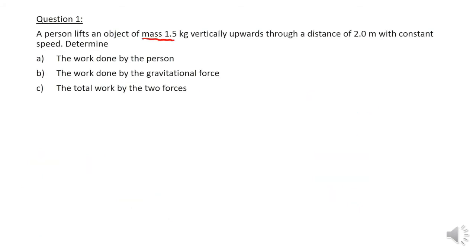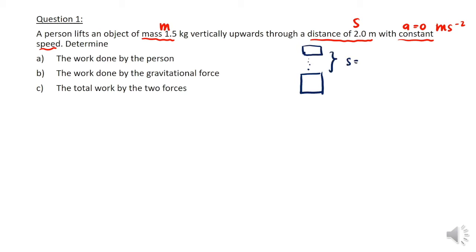Let's look at the first question, where a person lifts an object of mass 1.5 kg vertically upward through a distance of 2 metres at constant speed. A constant speed means acceleration equals 0 m/s². First you need to draw what you understand: we have an object being lifted through a distance of 2 metres, the object has weight, and there is a force used to lift it upward.